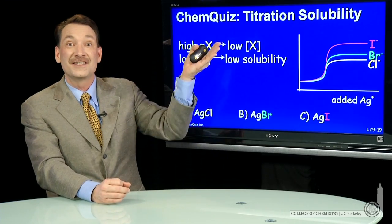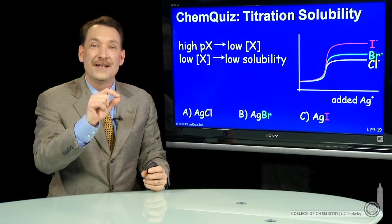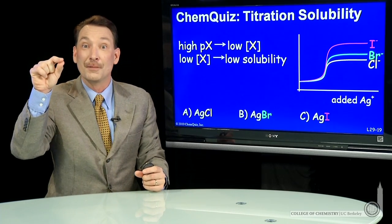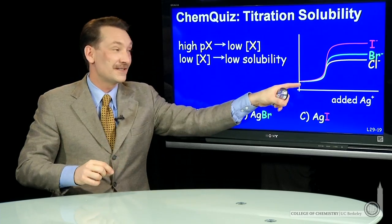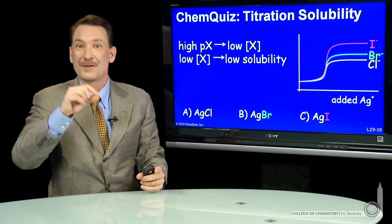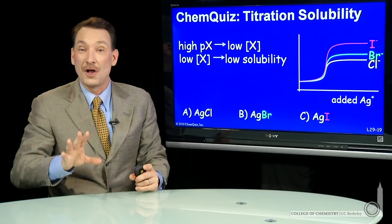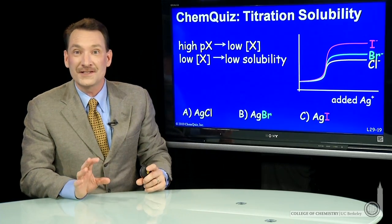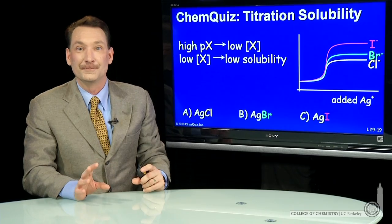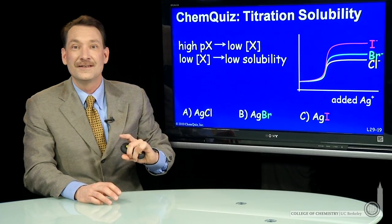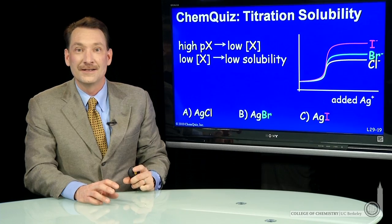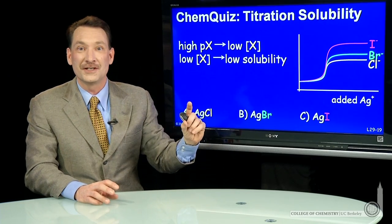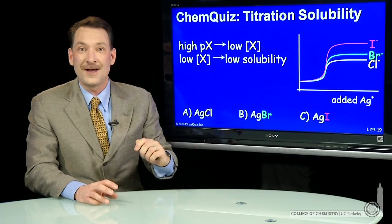So if the pX is high, then you have 10 to the minus high number versus 10 to the minus low number. 10 to the minus high number is a smaller number. So this represents the smallest concentration of iodine. So iodide, in the presence of silver ions, has the lowest concentration, so it's the least soluble.